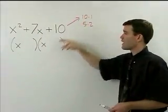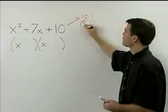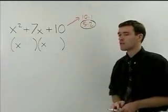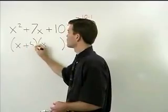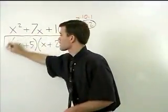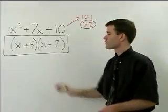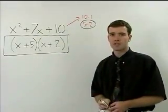Well, five and two. So we're going to put a five in our first binomial and a two in our second. And there's your answer, which is a factored version of x squared plus seven x plus ten.